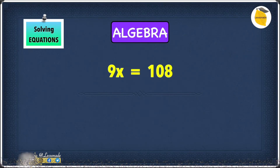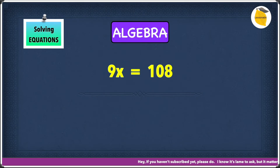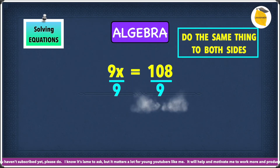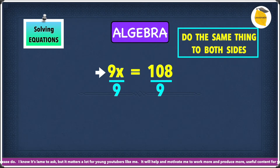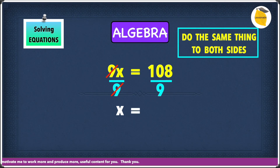Let's have a look at this example: 9x equals 108. The 9 is being multiplied to the x. To get rid of this 9, or to undo this times 9, we have to divide by 9 — written in fraction form. We do the same thing to both sides, so we divide 108 by 9 as well. We have a 9 at the top and a 9 at the bottom, which we cancel out, leaving just x. And 108 divided by 9 is 12, so our answer is x equals 12.